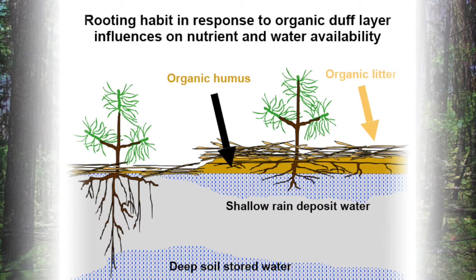Alternatively, a fibrous shallow root system is designed to take advantage of the nutrient-rich layer underneath an organic layer. Shade-tolerant species such as Douglas fir and grand fir produce this fine root system to exploit the nutrients right at the interface between the organic layer and the mineral soil, as depicted on this diagram.